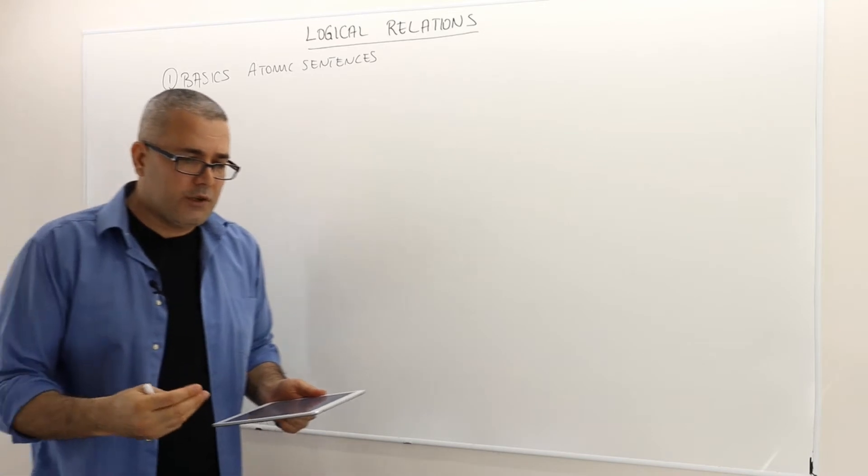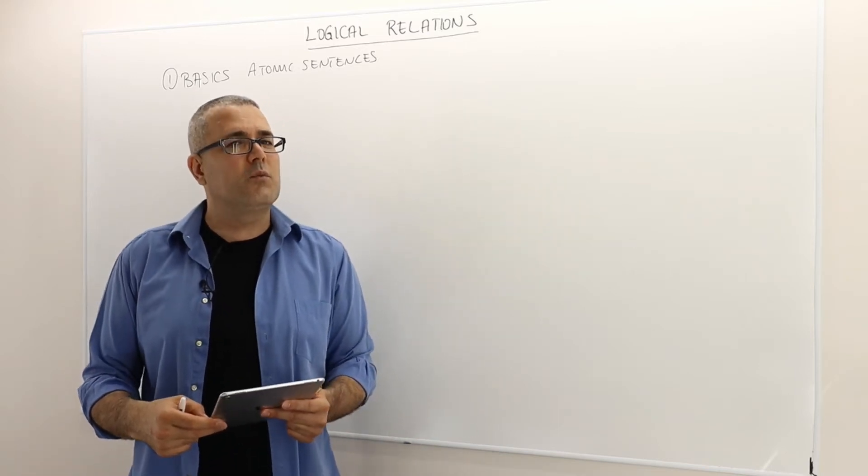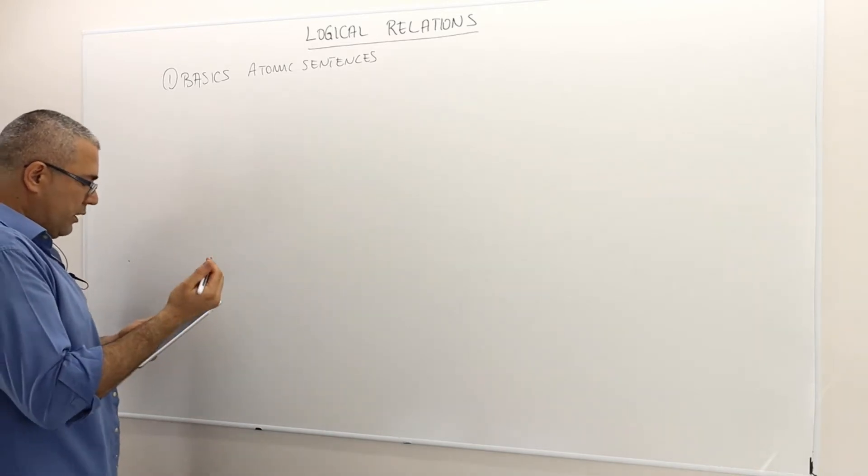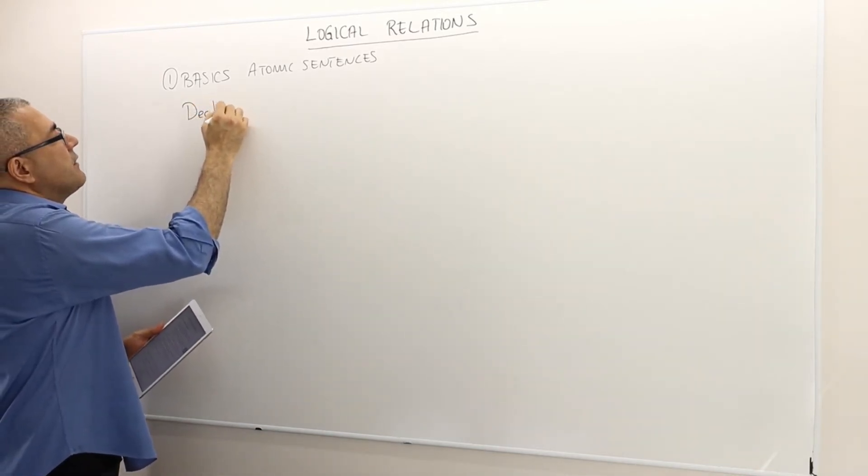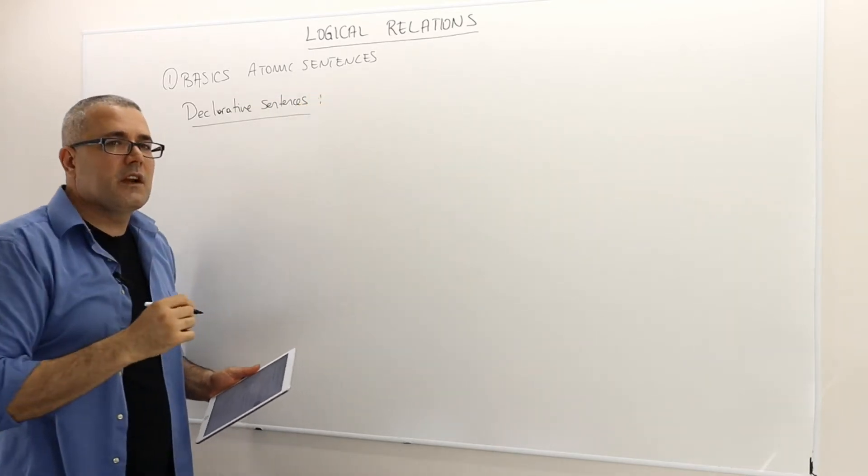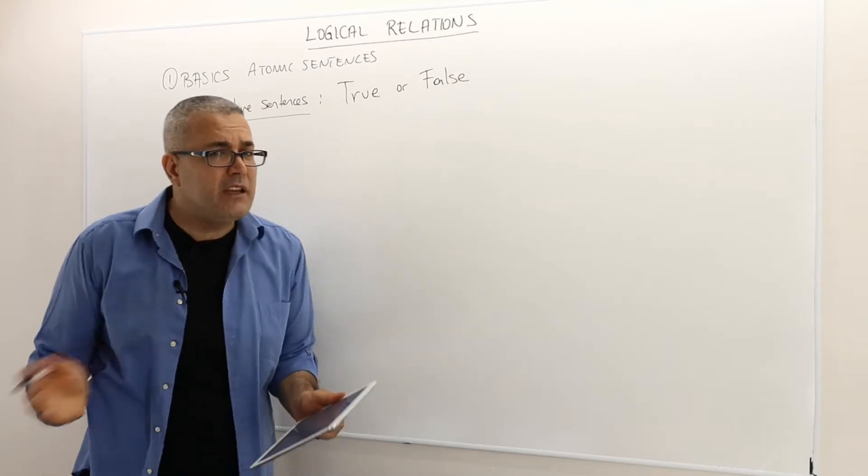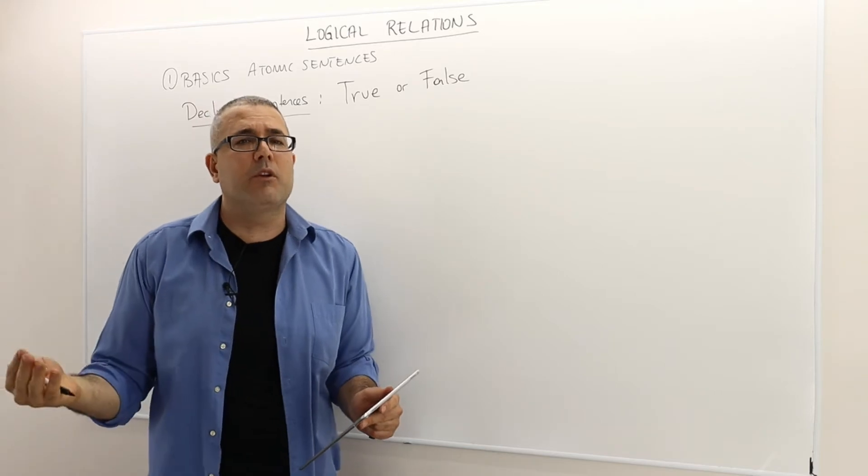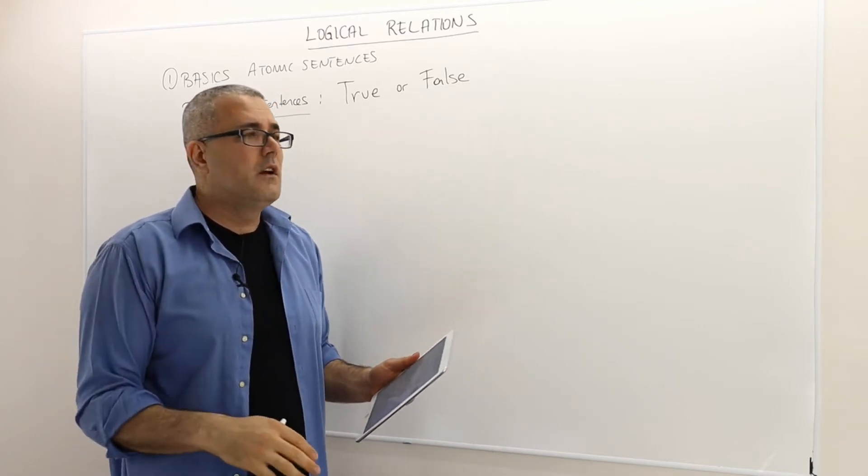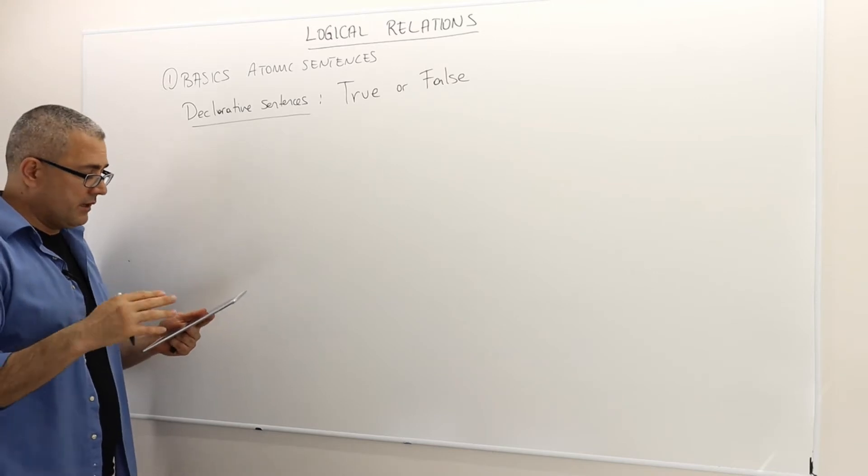We want our language to be precise. For example, a sentence like Tom is kind of tall is not the kind of sentence we are interested in when we study logic or logical reasoning. So therefore, what we call declarative sentences. These are the sentences that we will be looking at. They are sentences that are either true or false. They can't be both, they can't be neither. A sentence like Toronto is the capital of Canada is a declarative sentence. The world is square is a declarative sentence. So they're either true or false, never both, never neither.